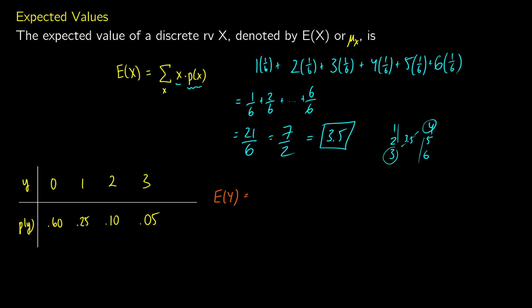So what we can do is we can multiply each y value by its probability, and we can add these together. So we get zero times 0.6 plus one times 0.25 plus two times 0.10 plus three times 0.05, which is going to give us zero plus 0.25 plus 0.20 plus 0.15. We can add these all together, we're going to end up with 0.6.